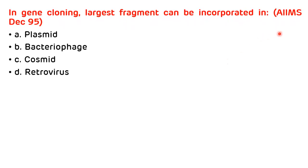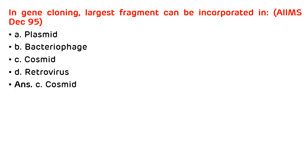The second question was asked in AIIMS December 1995: In gene cloning, the largest fragment can be incorporated in — options are: (A) cosmid, (B) bacteriophage, (C) cosmid, (D) retrovirus. Among all these four options, the largest DNA fragment can be incorporated in cosmid. The correct answer is cosmid.